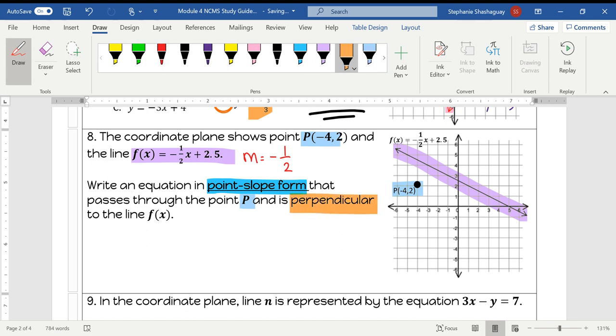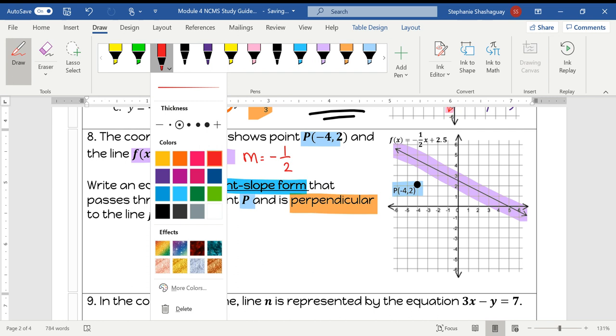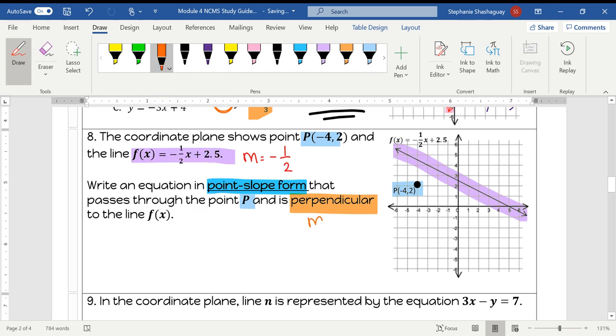Now I need to write an equation in point-slope form that passes through the point P and is perpendicular to the line f(x). So if the line has to be perpendicular, that means the slope of my line is going to become a positive 2, positive because the opposite of negative is a positive, and 2 because the reciprocal of 1 half is 2.